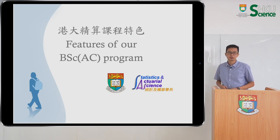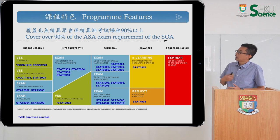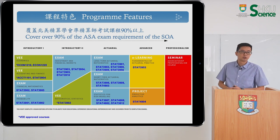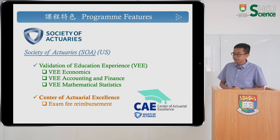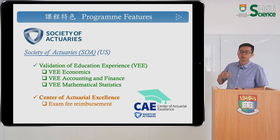I want to talk about some important features of our program. First, we follow the syllabus of both the Society of Actuaries and the Institute and Faculty of Actuaries. Our syllabus covers over 80% of the associateship requirement of the SOA. There are many examinations you need to pass to become an associate, and we have corresponding courses for each component. We are one of the Centers of Actuarial Excellence conferred by the Society, and selected students will get exam fees reimbursed. We also have the VEE arrangement with the SOA, meaning for some components you don't need to take exams — just pass our courses to get the credits.